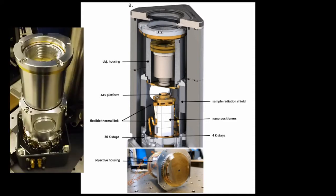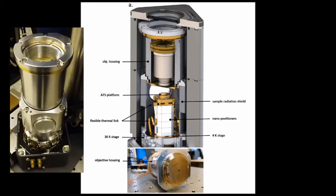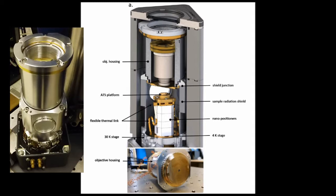The sample radiation shield and objective housing are attached and referenced by mating together at the shield junction, all in vacuum. The enclosure for the optic is threaded and allows vertical, coarse positioning. Although this bond provides a rigid positional reference, the two sections are thermally disconnected within the shield junction.